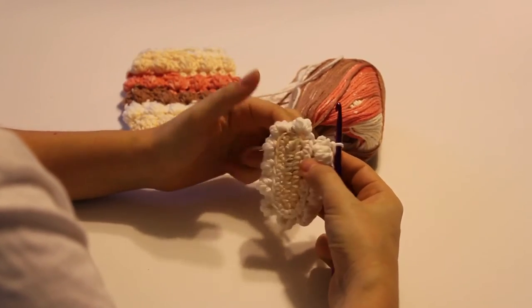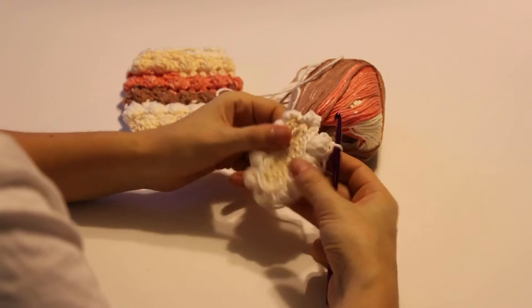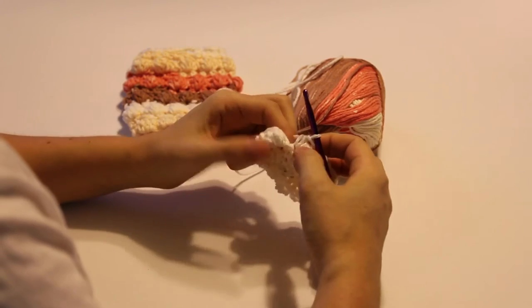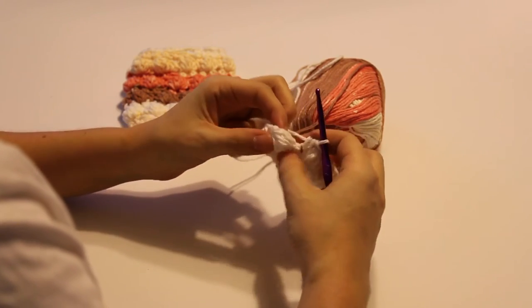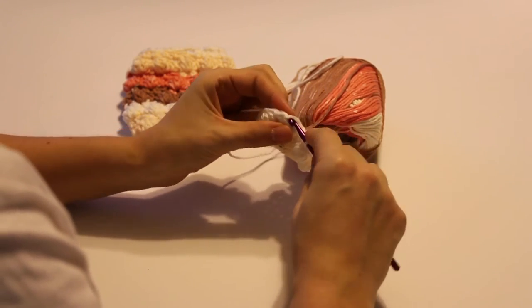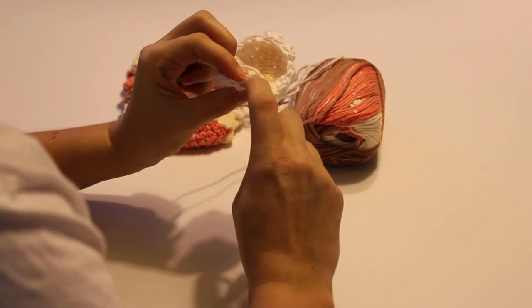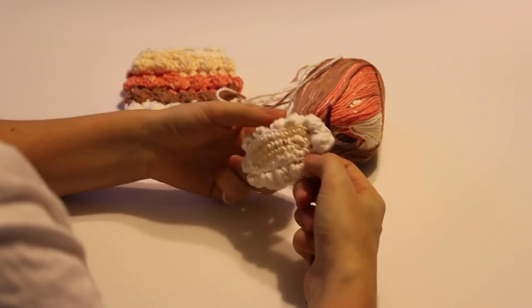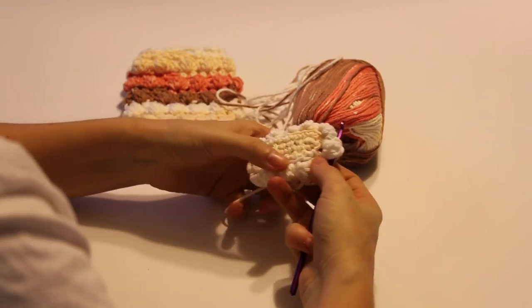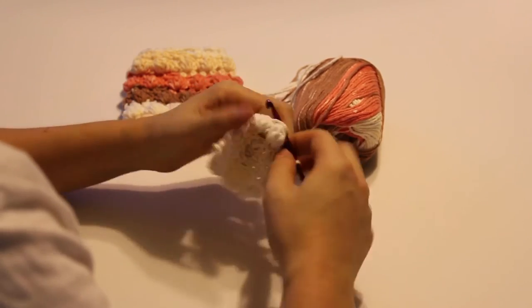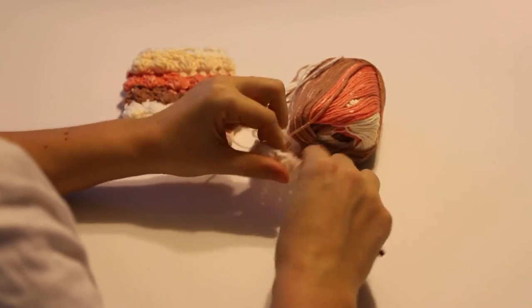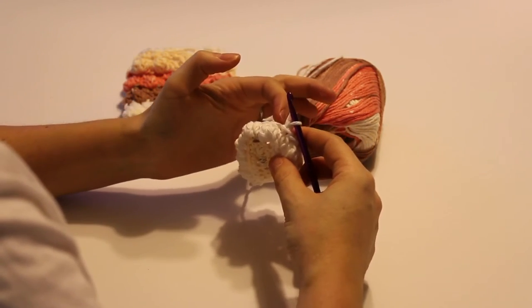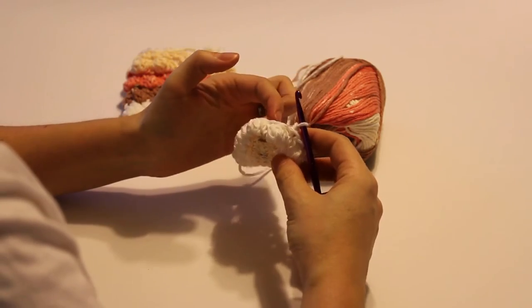All right, now that you've finished this row, you should have 11 bobbles total and you should end on a half double crochet so that it keeps that every other. So you're going to join into the top of the bobble stitch with a slip stitch. Get it through both loops there. And from now on you will be working through both loops. It's just the bottom that you work through the back loop only so you get that nice little ring there. So join with your slip stitch, chain one.